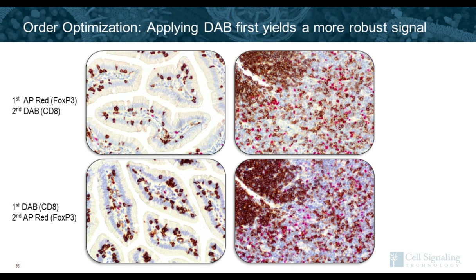The next step is to optimize the order. Running alkaline phosphatase with FOXP3 first followed by DAB with CD8 second was compared against the reverse order on mouse small intestine and spleen. When running DAB with CD8 first followed by alkaline phosphatase with FOXP3 second, much stronger signal was obtained — particularly with the CD8 clone, but FOXP3 signal appeared stronger as well. This was determined to be the optimal staining order.